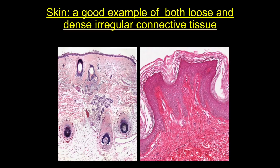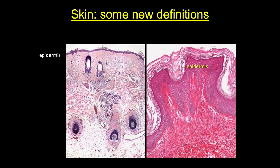Before we move on to cells, I want to highlight skin as a great example of an organ with both loose and dense irregular connective tissue. The first arrow shows the loose connective tissue under the epithelium, while the second arrow highlights the denser tissue with much thicker collagen bundles that lies in the dermis. Let's mention some definitions specific to skin: first, the most superficial layer is the epidermis; next, the deeper layer is the dermis, which contains blood vessels, nerves, hair follicles, and glands; and finally, the deepest layer is the hypodermis, which contains a large amount of adipose tissue.